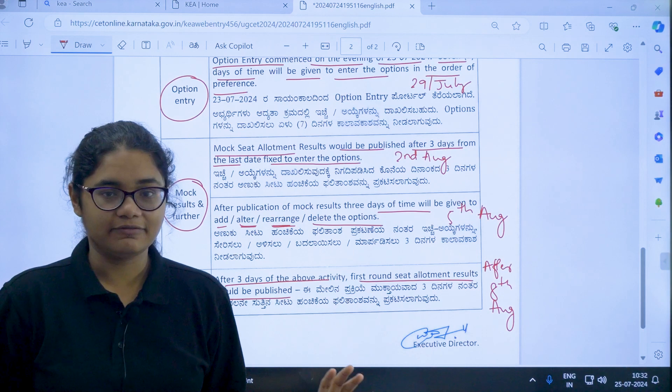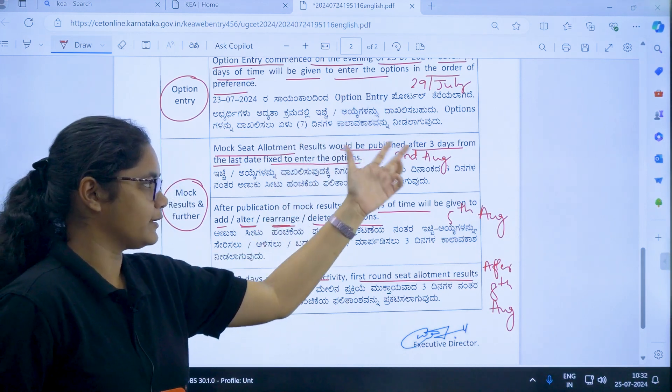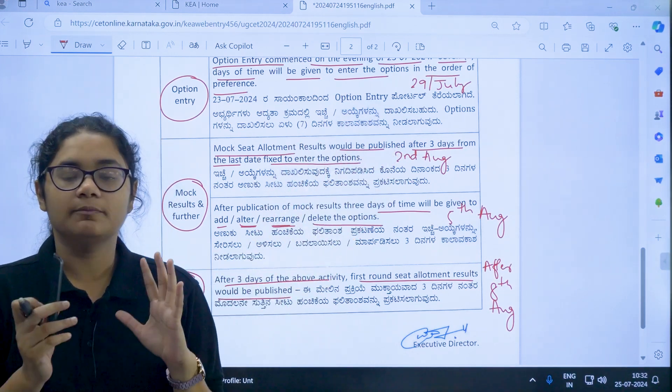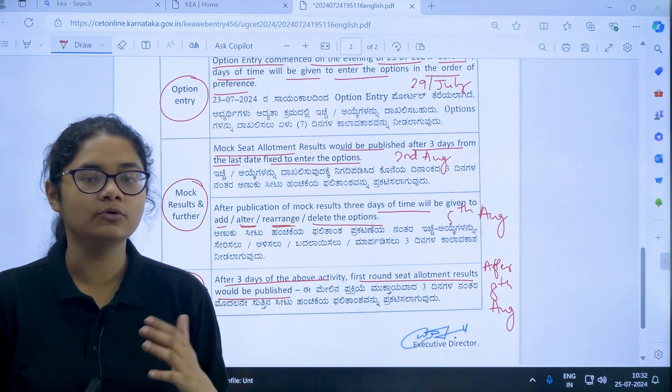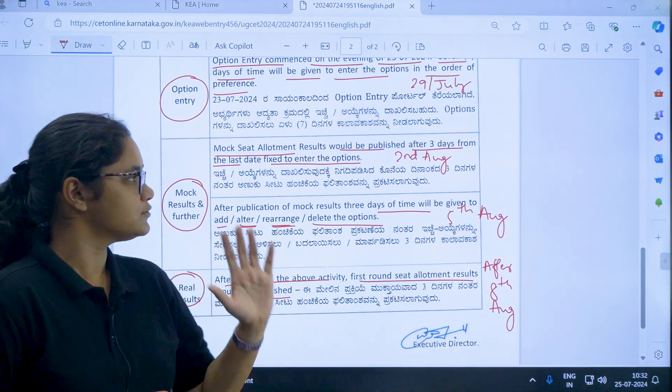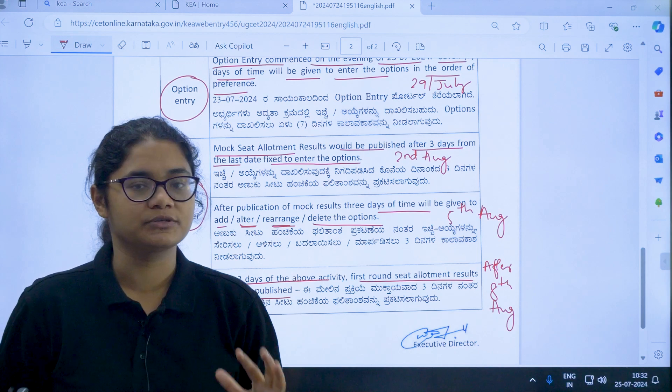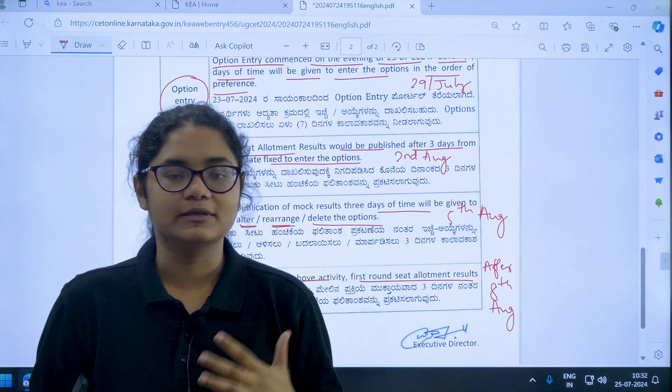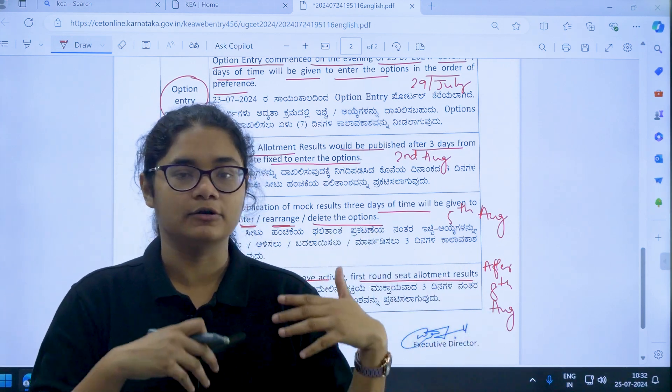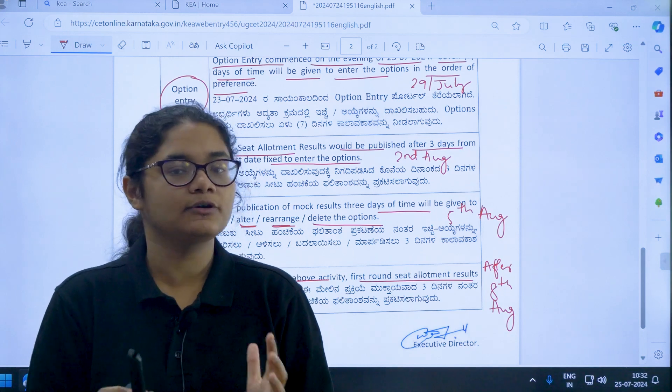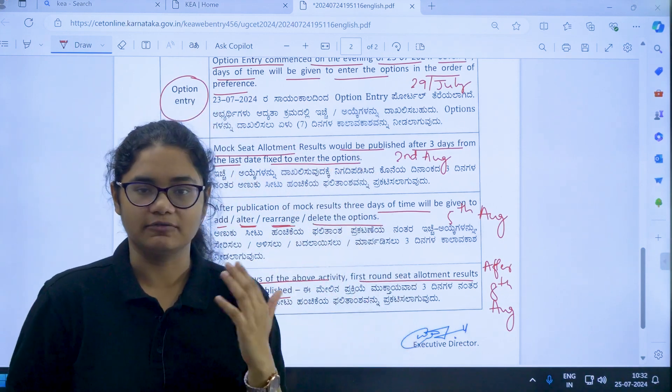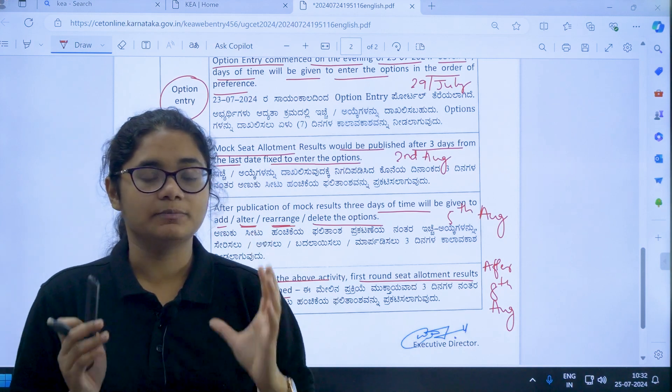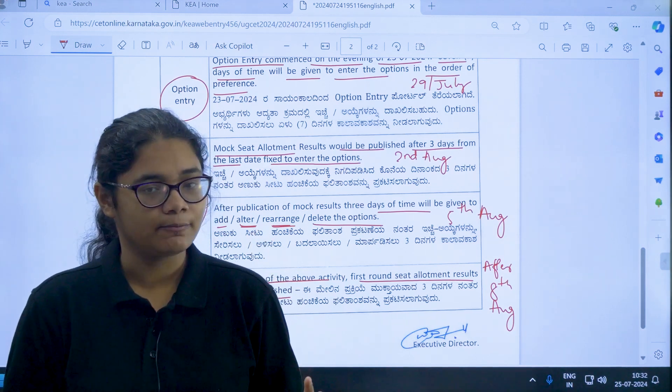Be very careful about the deadline. If you miss this you will not be able to change your options. So be very careful you must finish your option entry by 29th of July. Take as much time as you can now, do proper research and finish it on time. Then once the mock allotment is there again you will get 3 days of time to modify the changes. Please stick to the deadlines, these are very important.